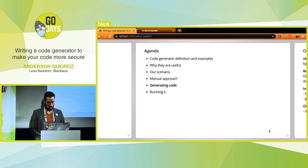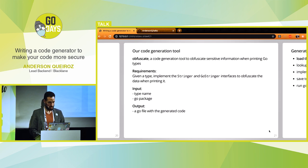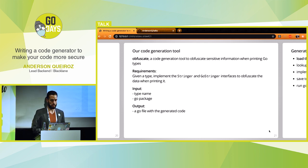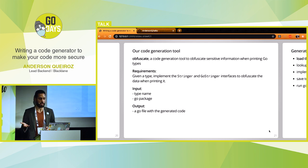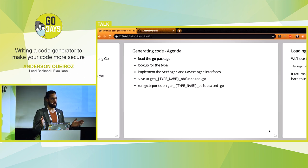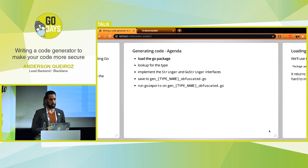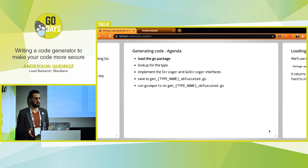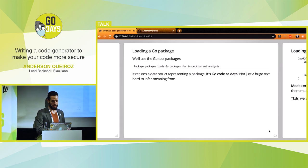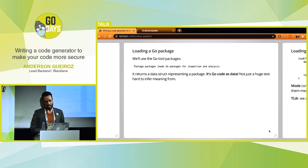So let's make this automated. Our code generation tool is called 'obfuscate' — it obfuscates sensitive information when printing a Go type. Given a type, we implement the Stringer and GoStringer interfaces to obfuscate the data when printing. Our input is the type name and a Go package; the output is a Go file with the generated code. To generate this code we: load our Go package, find our type inside the package, implement both interfaces, save to a file, and finally run goimports to make sure the code is well-formatted and imports are correct.